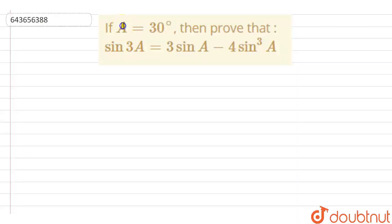Here the question is: If A equals 30 degrees, then prove that sin 3A equals 3 sin A minus 4 sin³A.